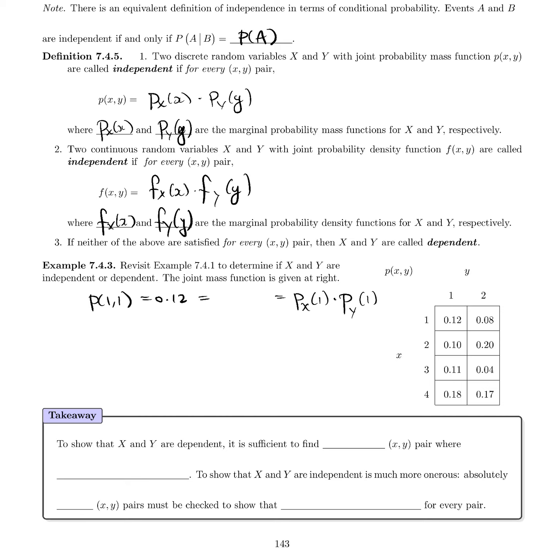So p_X(1) is, what did we get here, 0.2. So 0.2 times p_Y(1), we would have added down that column, which has given us 0.51. So 0.51. And these two things are not equal. This ends up giving us 0.102.